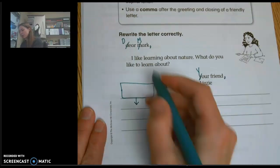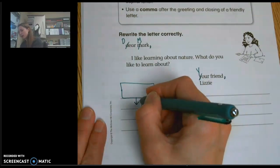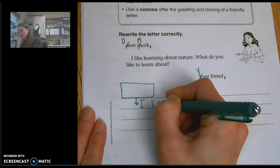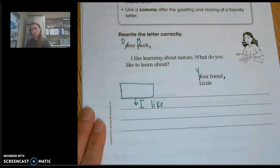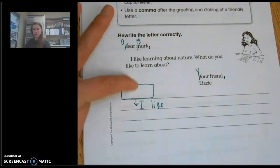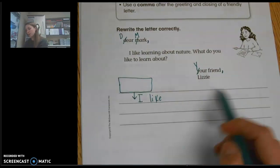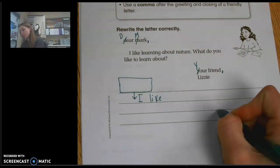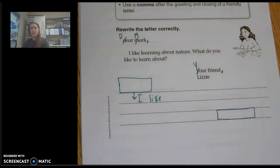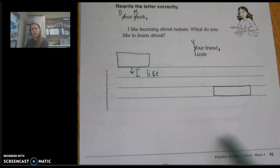And then make sure you indent. So you're going to start here with the I, and then continue on. You do not have to draw the boxes. You will just write what belongs in the box. And then for the closing, make sure we write it over here, just like it is in the example. If you need to go down below in this space to make room, that is perfectly fine.